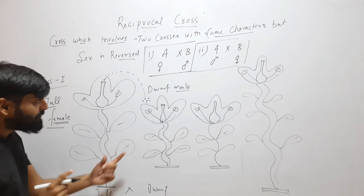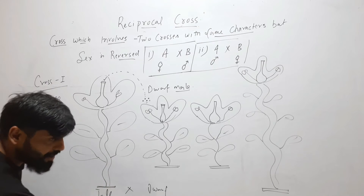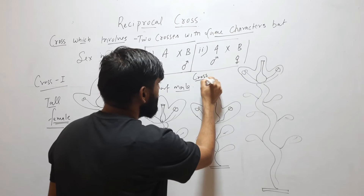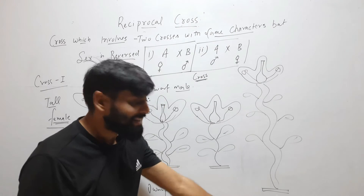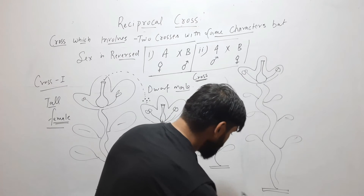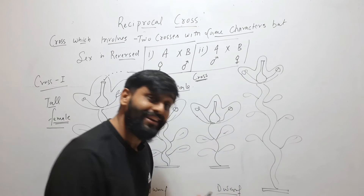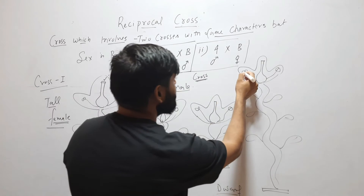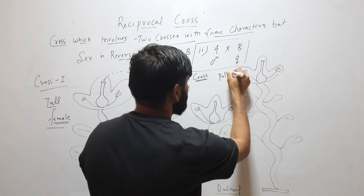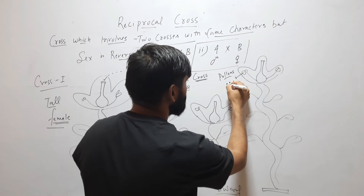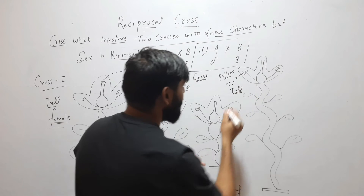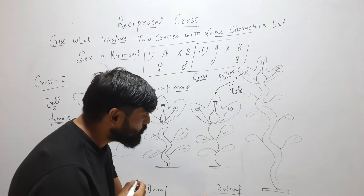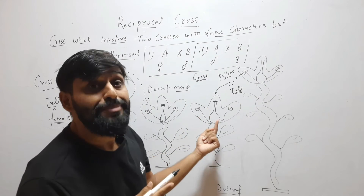In the second cross, what characters am I taking? I am taking tall and dwarf plants — these are my characters. So in cross number two, the characters will be the same: tall and dwarf. But I am reversing the sexes. Here I am taking pollen from the tall plant and putting it on the stigma of the dwarf plant, so here I am using the dwarf plant as the female plant.